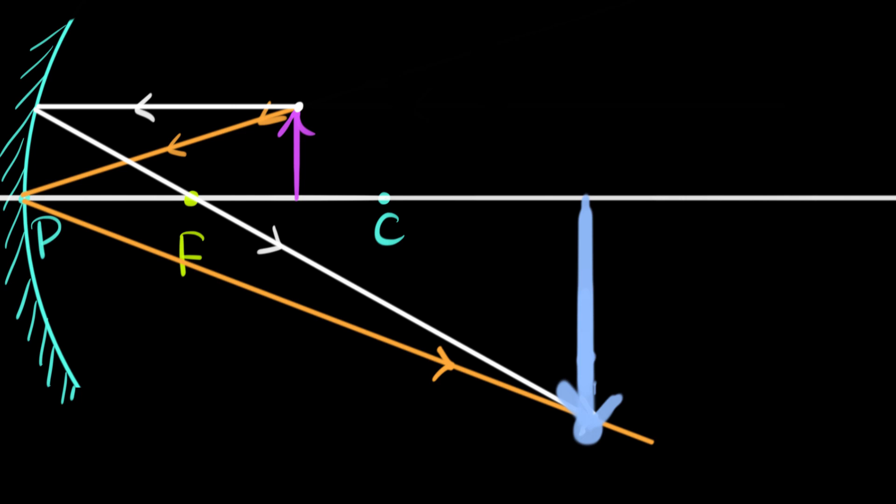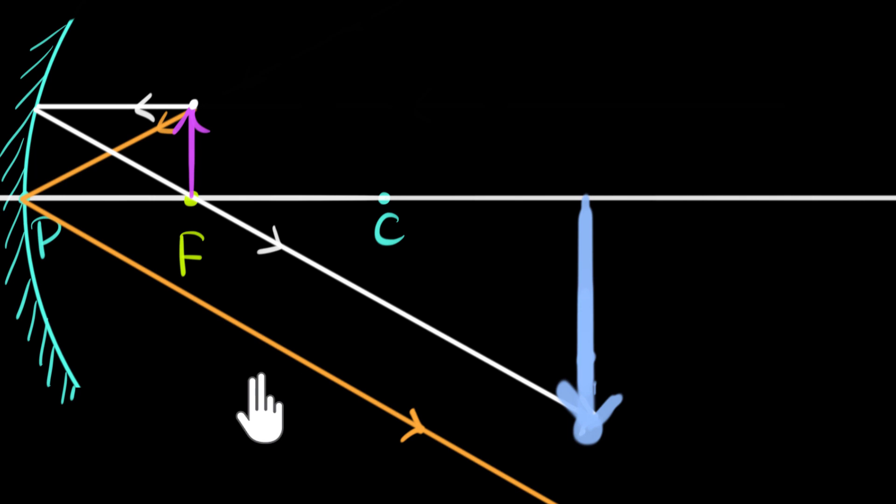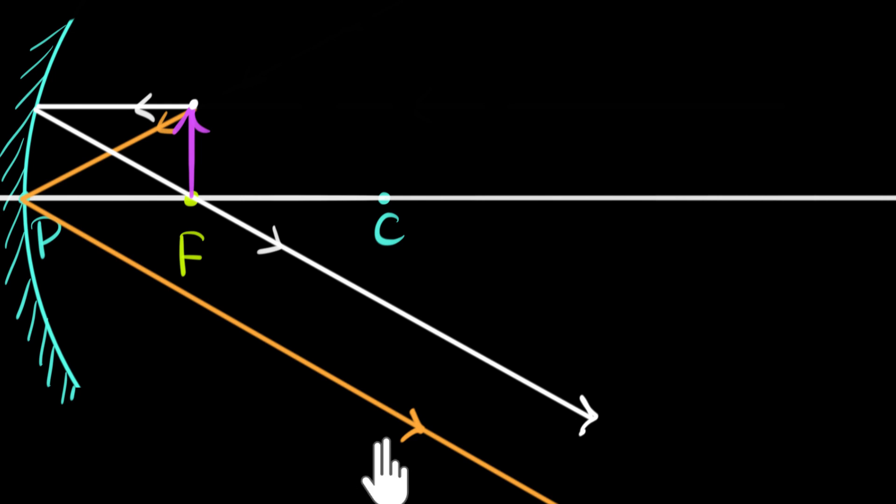Eventually, we can bring the object right to the principal focus. At the principal focus, the two reflected rays become exactly parallel to each other and will never meet, which means no image is formed. Some people say the image is formed at infinity — at infinitely far away. So at the principal focus, no image is formed.